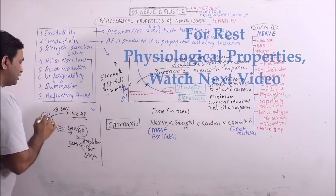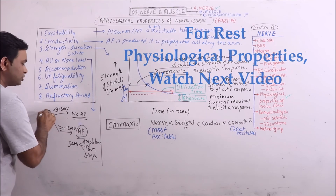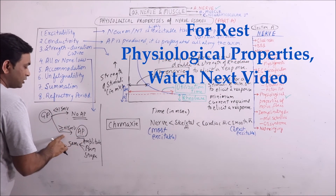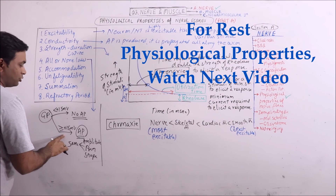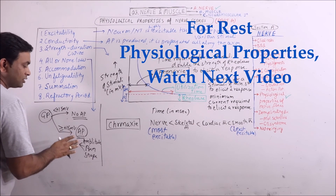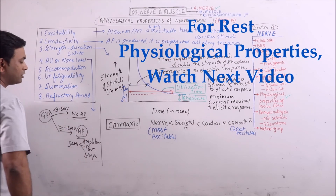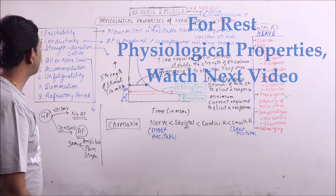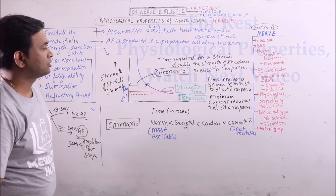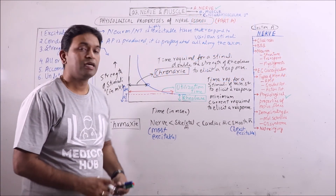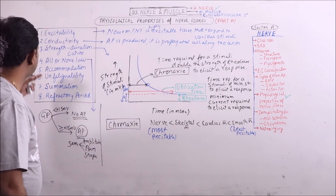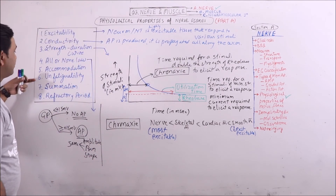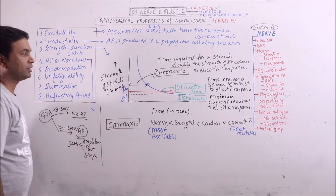Either the action potential will not be produced, or every action potential produced as a result of a threshold or supra-threshold stimulus will be of the same amplitude, form, and shape. These are the physiological properties of nerve fibers covered in this lecture. In the next lecture, we will discuss accommodation, unfatigability, summation, and refractory period.